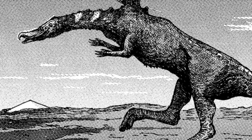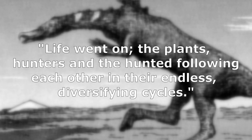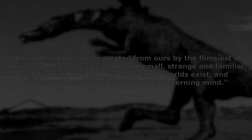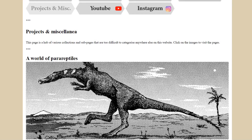Kozman caps this article off by stating: 'Life went on, the plants, hunters, and the hunted following each other in their endless diversifying cycles. On another timeline separated from ours by the flimsiest of barriers, all these creatures, large and small, strange and familiar, still flourish, live and die. Many such worlds exist, and all render themselves visible to the discerning mind.' This article was meant as a fun exercise to establish different ideas and more realistic concepts when approaching speculative evolution, and I feel that C.M. Kozman succeeds in this. I urge you to check out this article on Kozman's official website, along with his other works — this man has truly given us some of the strangest yet most fascinating ideas in speculative evolution, and it definitely needs more attention.